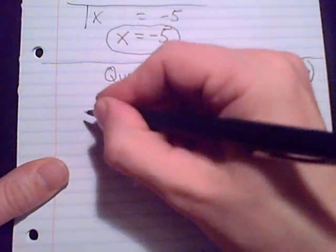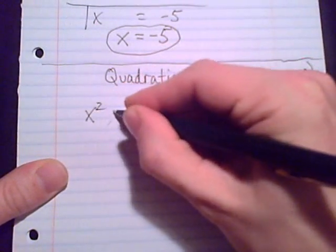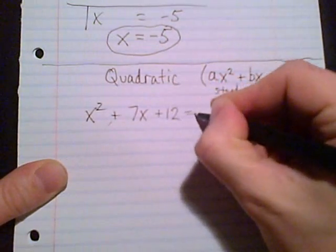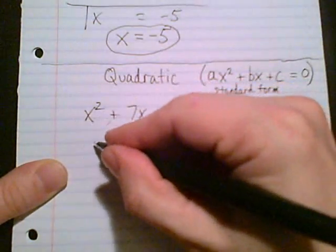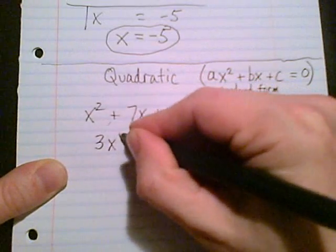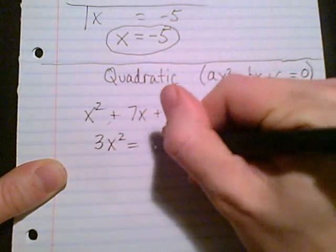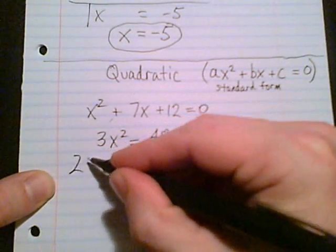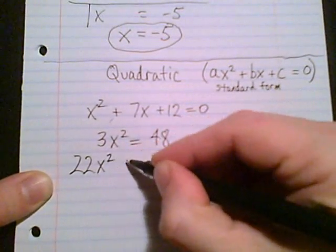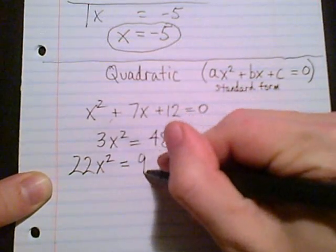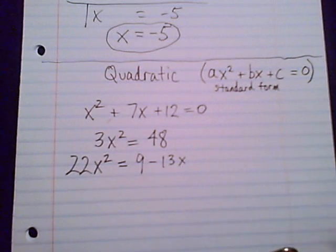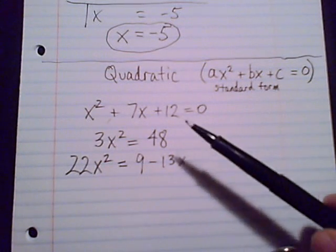Some examples of quadratic equations would be x squared plus 7x plus 12 equals 0, that's a common one. Or a different one could be 3x squared equals 48. Or you could have 22x squared equals 9 minus 13x.